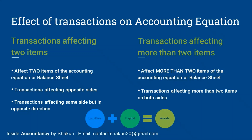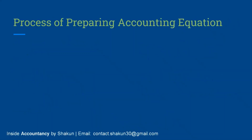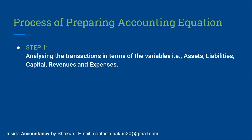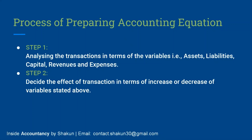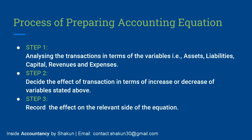The equality of the accounting equation is never nullified. The process of preparing an accounting equation involves three steps: Step one — analyze the transactions in terms of variables, that is assets, liabilities, capital, revenue, and expenses. Step two — decide the effect of transactions in terms of increase or decrease in those variables. Step three — record the effect on the relevant side of the equation.